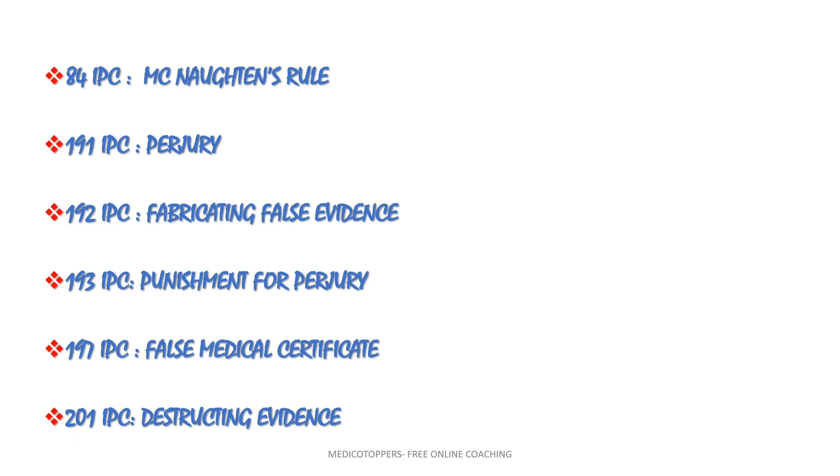Next, IPC 197 is for a false medical certificate, and 201 is for destroying the evidence.